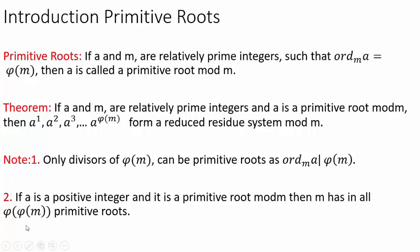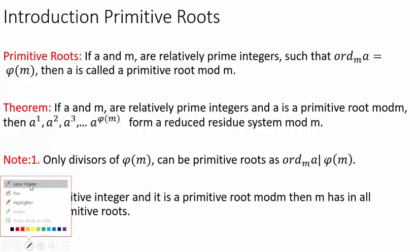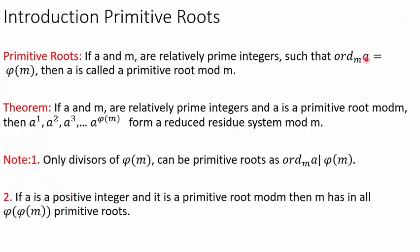If a and m are relatively prime integers such that the order of a mod m is equal to φ(m), then a is called a primitive root mod m. There is another useful theorem which says if a and m are relatively prime integers and a is a primitive root mod m, then the powers of a — from a¹ up to a^φ(m) — form a reduced residue system mod m.